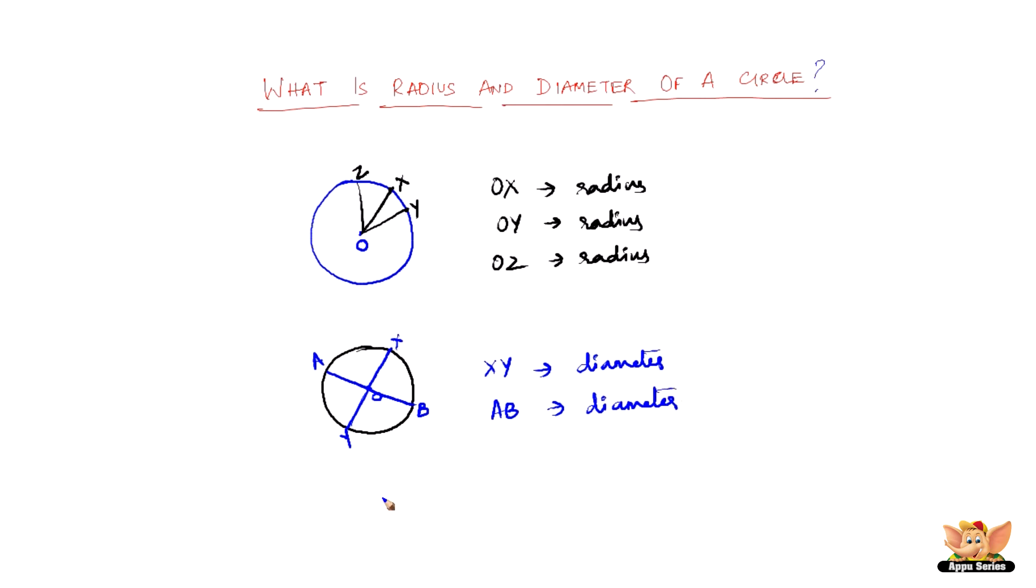So in simpler terms, the diameter is 2 times the radius. Or, the radius is half of the diameter. This is the relationship between radius and diameter, and this is what radius and diameter mean.